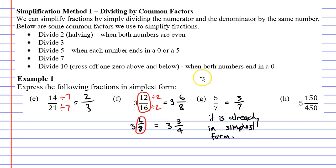Let's now move on to question H. Once again, we ignore the whole number and just focus on the fraction 150 over 450. I can see that both numbers end in a 0 here, which is great. That means I can cross off one 0 above and one 0 below. Our fraction is now 5 and 15 over 45.